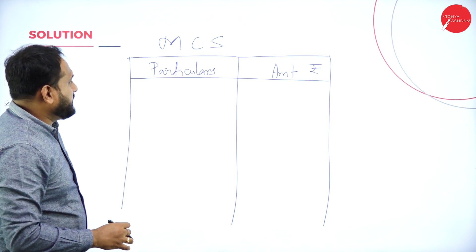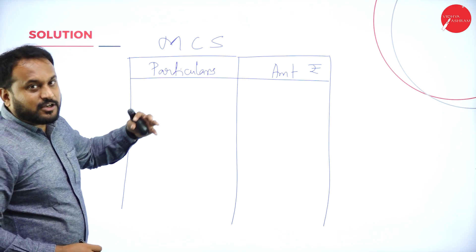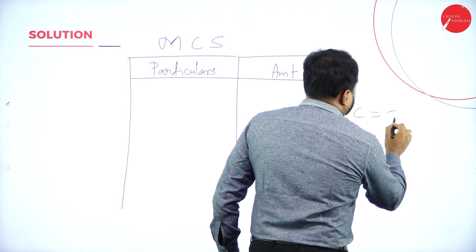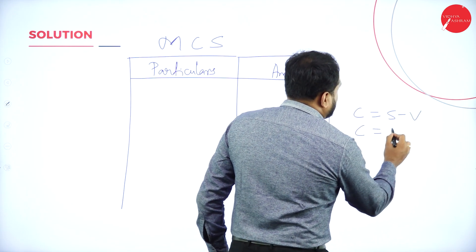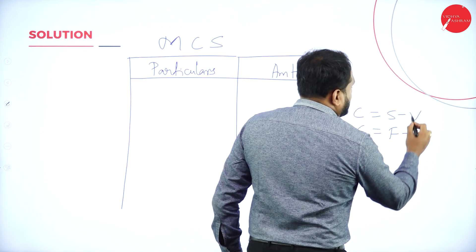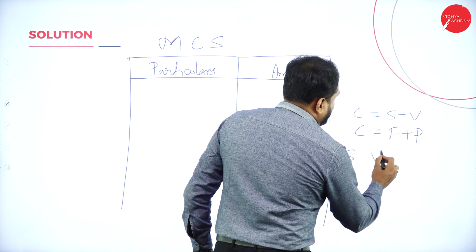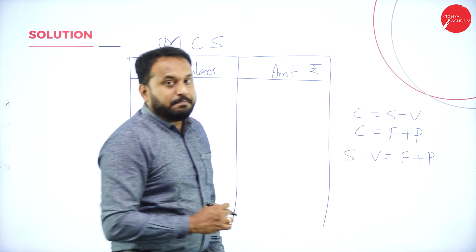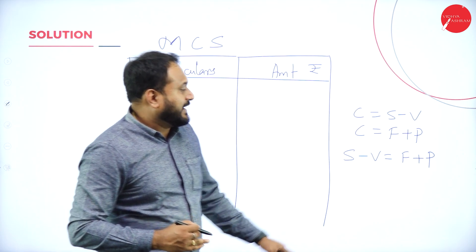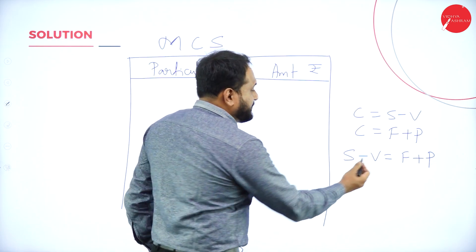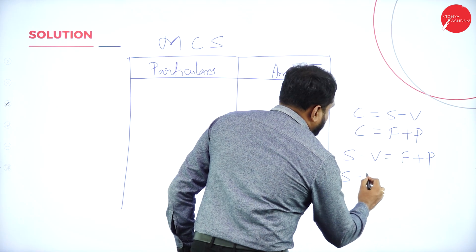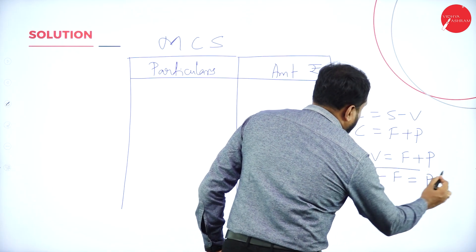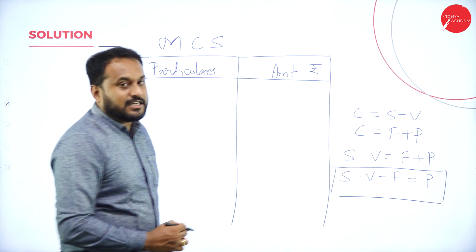The marginal cost statement follows the formula: C = S − V and C = F + P, so S − V = F + P. The marginal cost statement is used to find profit. Rearranging: S − V − F = P. So the format is: Sales minus Variable Cost gives Contribution, and Contribution minus Fixed Cost gives Profit.